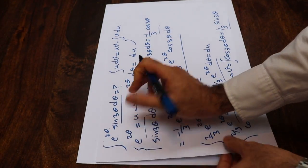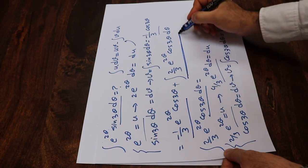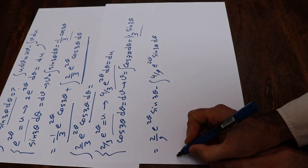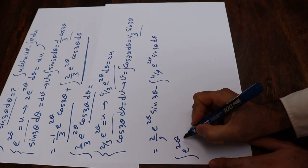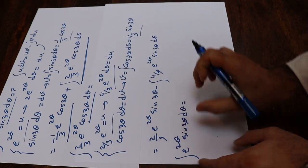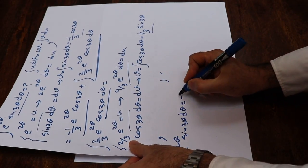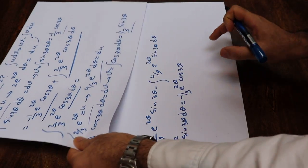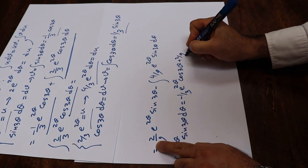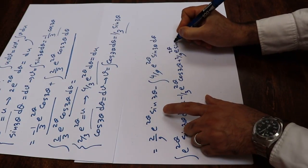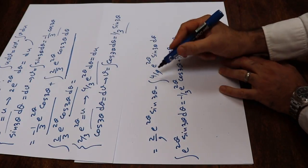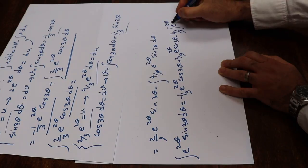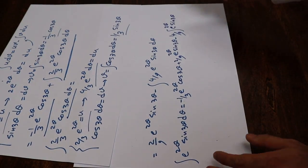We have the original integral equal to the first result plus this new integral. We know this new integral equals the two terms just found. So writing it all together: the original integral of e^(2θ) sine 3θ dθ equals minus 1/3 · e^(2θ) cosine 3θ plus 2/9 · e^(2θ) sine 3θ minus 4/9 times the integral of e^(2θ) sine 3θ dθ.